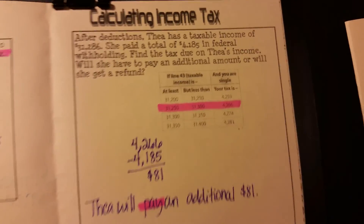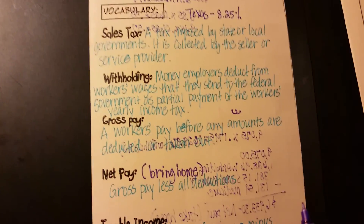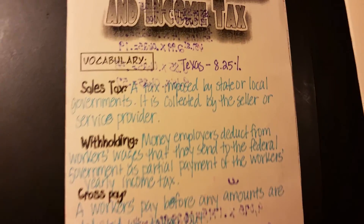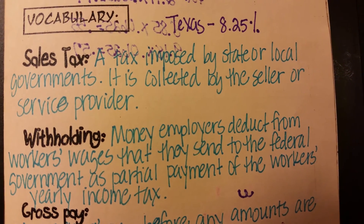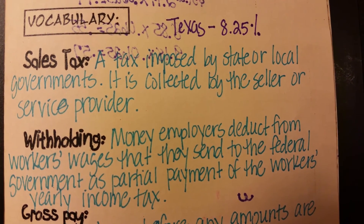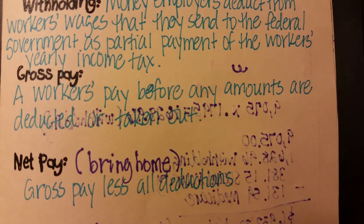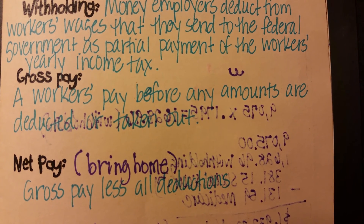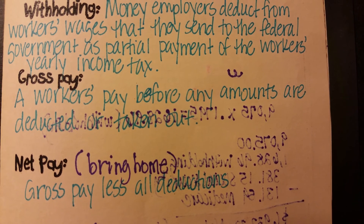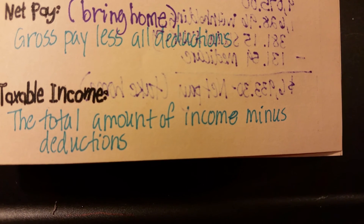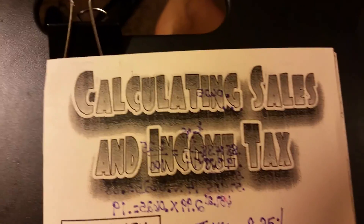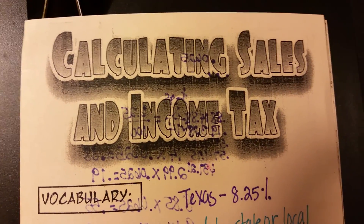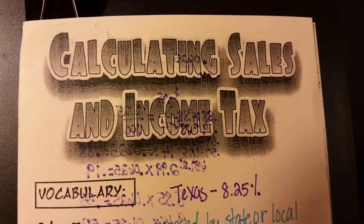Let's go back to the first page. I'm going to give you a second to write down these definitions. There's sales tax and withholding — pause and get that. There's gross pay and net pay, and there's your taxable income. We just finished calculating sales tax and income tax.